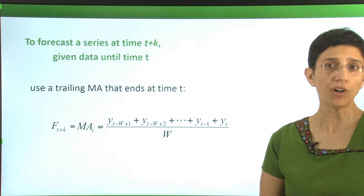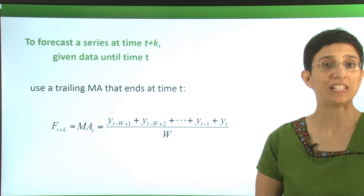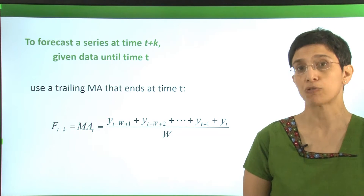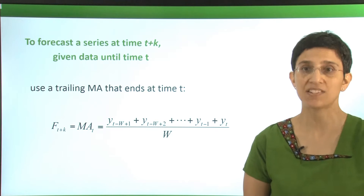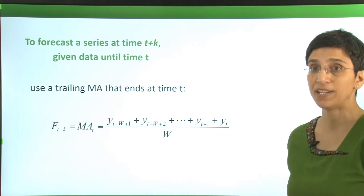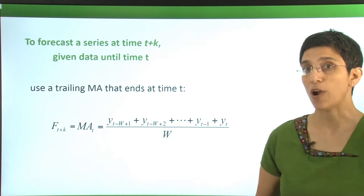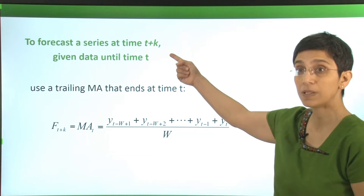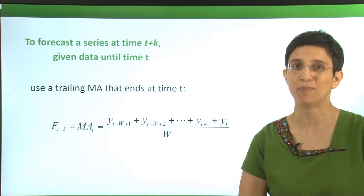In short, to forecast at time t plus k, given data until time t, we use a trailing moving average that ends at time t. Notice that it doesn't matter how far into the future you're forecasting — your forecast number is going to be the same number.